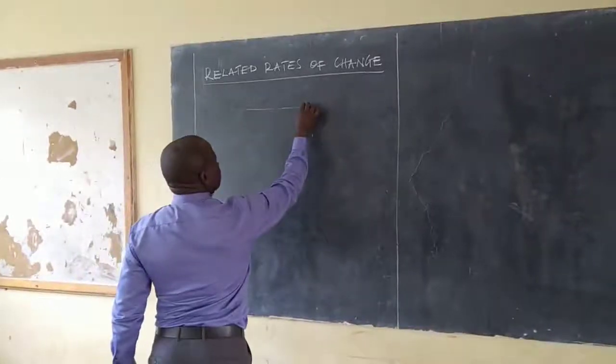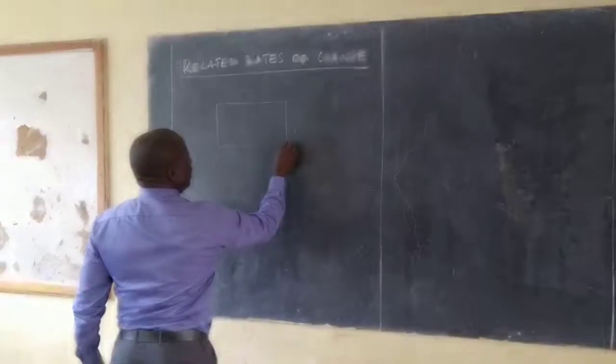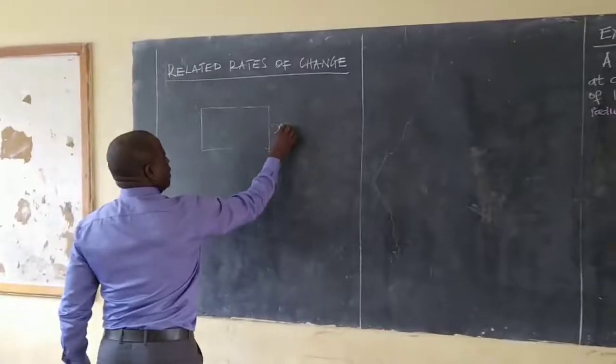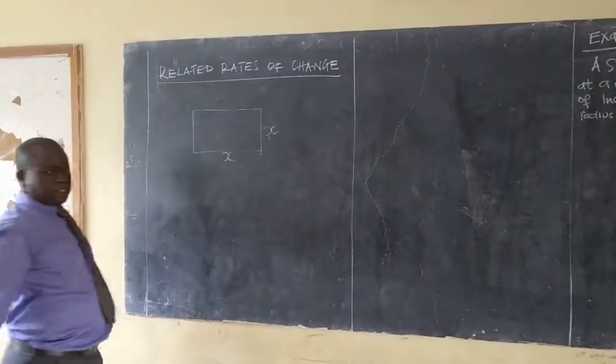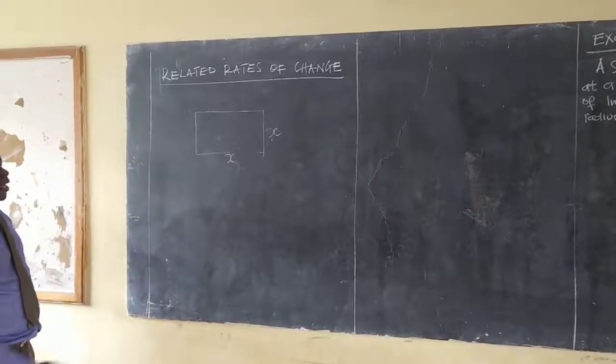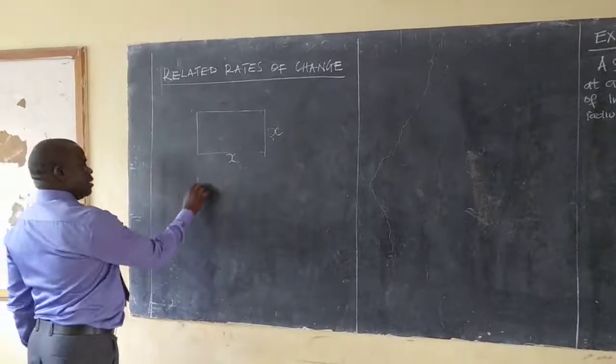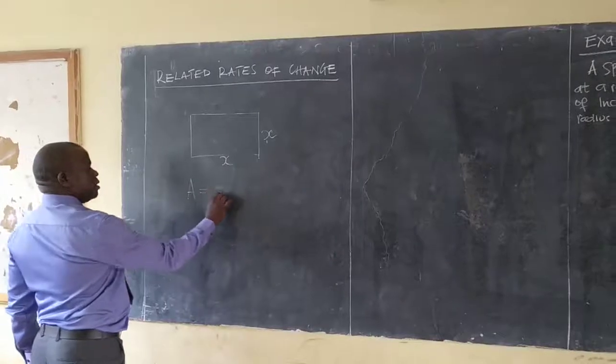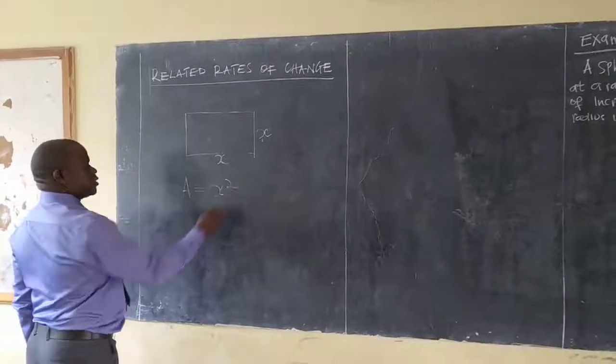For instance, if you have a square of size x, a square of size x. Now we know the area of this square, A, would be x times x, which is going to be x squared.